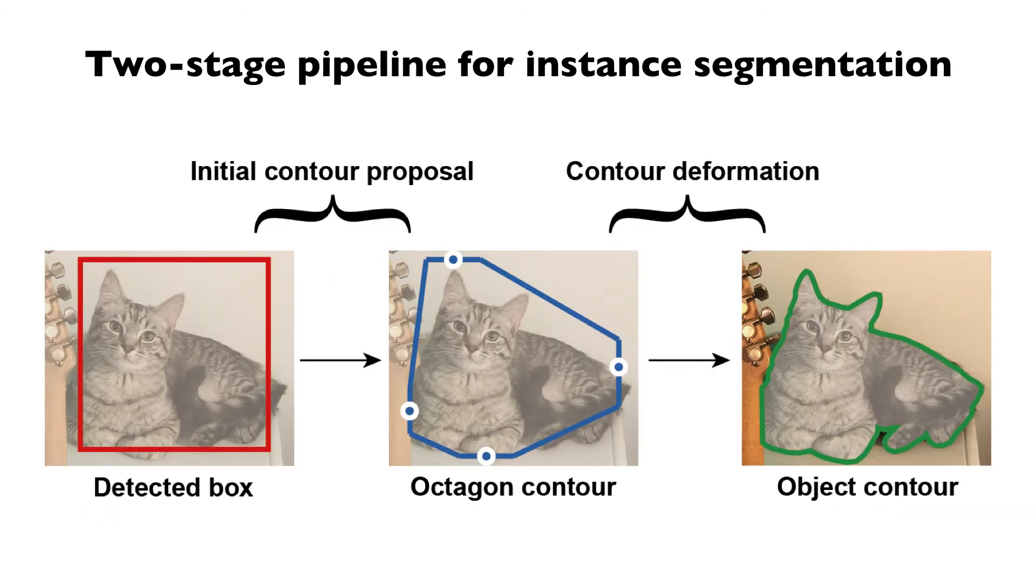Based on DeepSnake, we develop a two-stage pipeline for instance segmentation, which first proposes an initial contour from the detected box and then deforms it to the object contour.